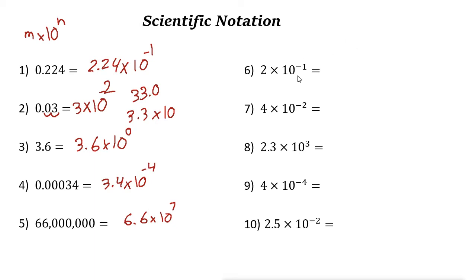Now we want to write the standard form given the scientific notation. If the power of 10 is negative, that means we're looking for a decimal. Move the decimal point to the left. For 2 times 10 to the power of negative 1, the decimal point is here — move it 1 place — so it becomes 0.2, or two tenths.